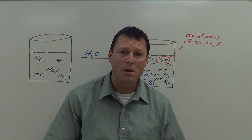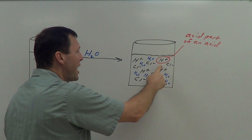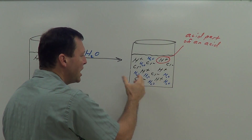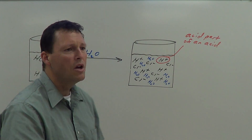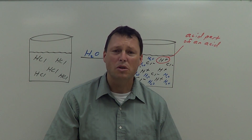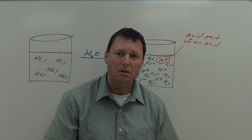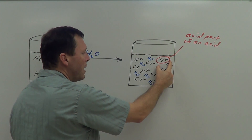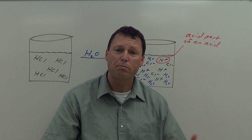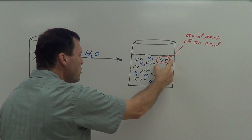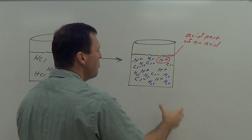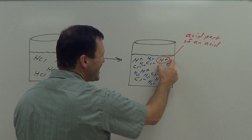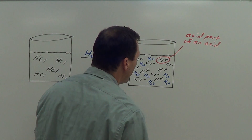But what do all acids have in common? They have these hydrogen ions. The more hydrogen ions that are present in a given volume of solution, the more acidic that solution is going to be. Another name for a hydrogen ion is a proton. The more of these hydrogen ions you have, the more acidic your solution is, because this is the acid part of an acid.